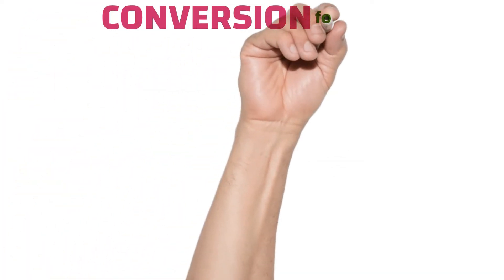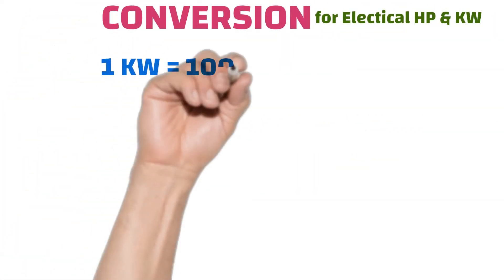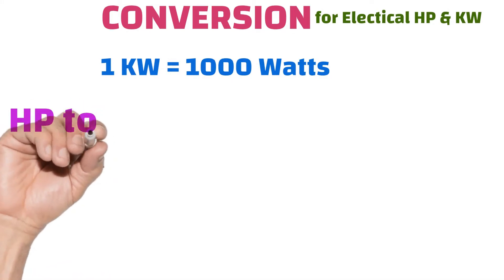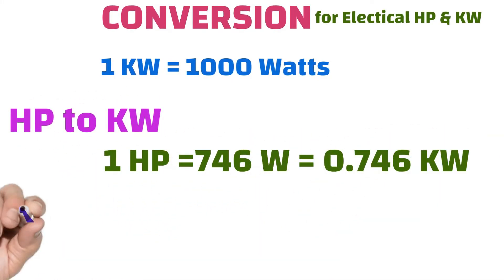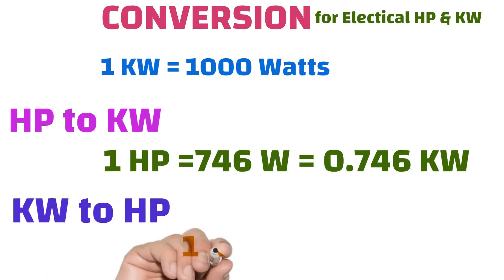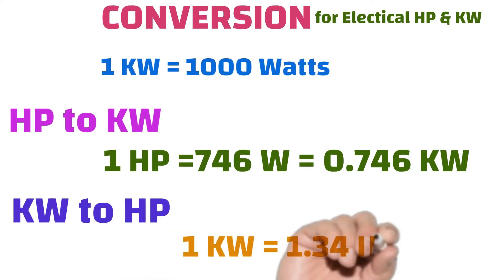Conversion in electric as below. Conversion from horsepower to kilowatt is 1 horsepower equals 746 watts, which is equals to 0.746 kilowatts. Conversion from kilowatt to horsepower is 1 kilowatt equals 1.34 horsepower.